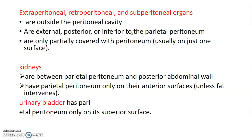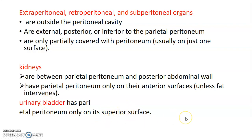Extraperitoneal, retroperitoneal, or subperitoneal organs are external, posterior, or inferior to the peritoneum. Extraperitoneal means external, retroperitoneal means posterior, and subperitoneal means inferior to the peritoneum. They are only partially covered by peritoneum — only one surface. A good example is the kidney, which sits between the peritoneum and the posterior abdominal wall, with peritoneum covering only its anterior surface. The urinary bladder is another example, where the peritoneum only covers its superior surface.